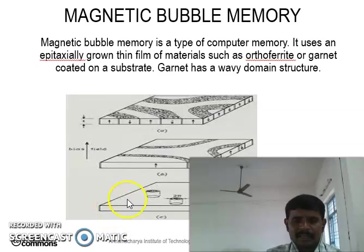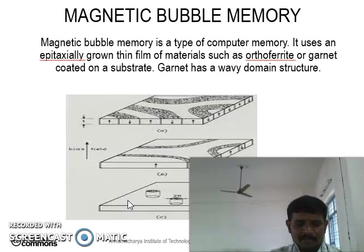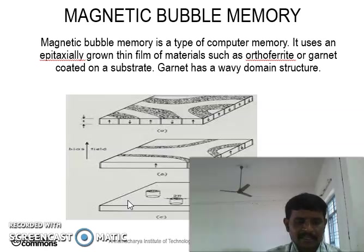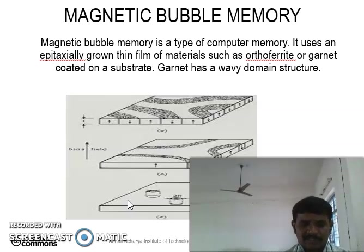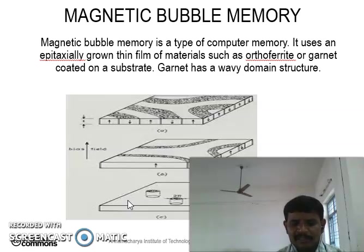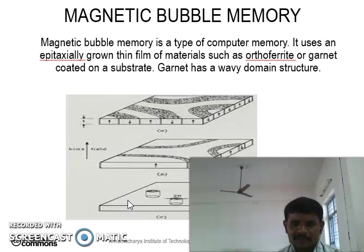When an external magnetic field is applied perpendicularly through the direction of the film, and the magnetic domain strip opposes the external magnetic field, as a result it begins shrinking. These narrow strips shrink down, meaning they become smaller in size, as we can observe in the first diagram.